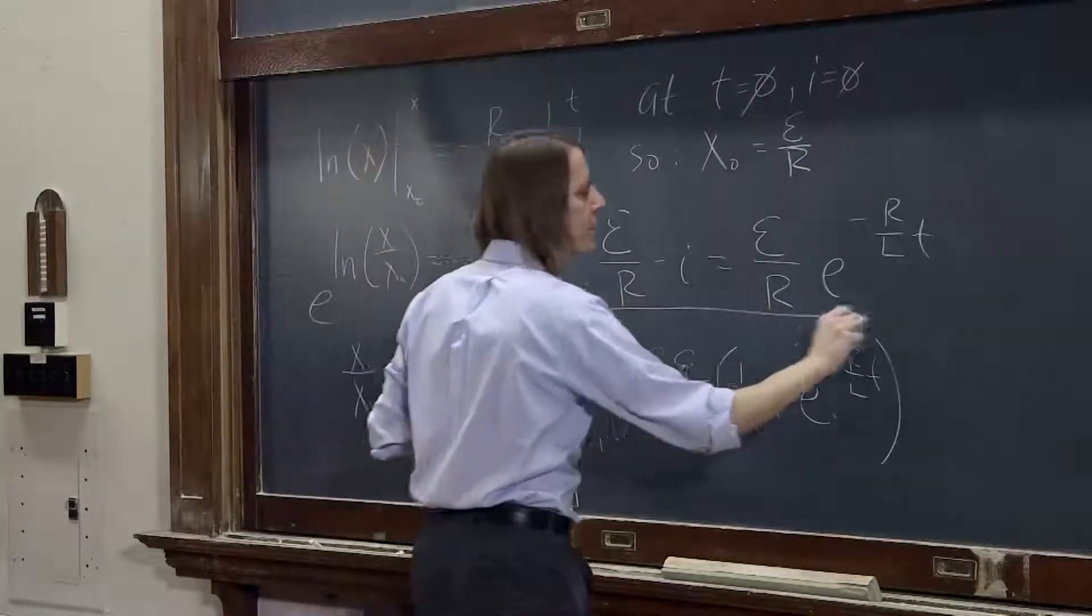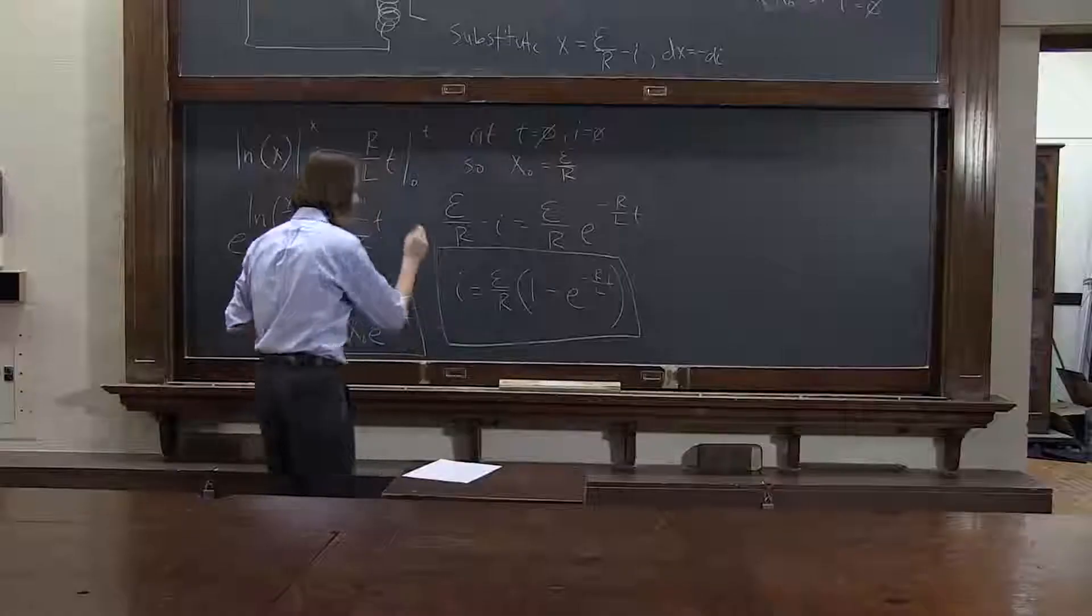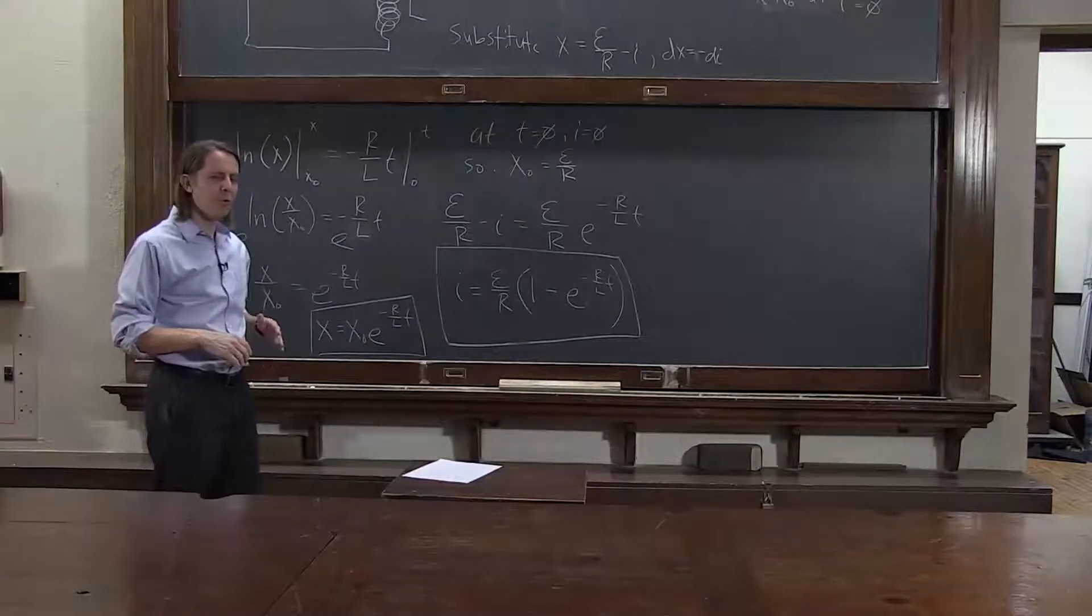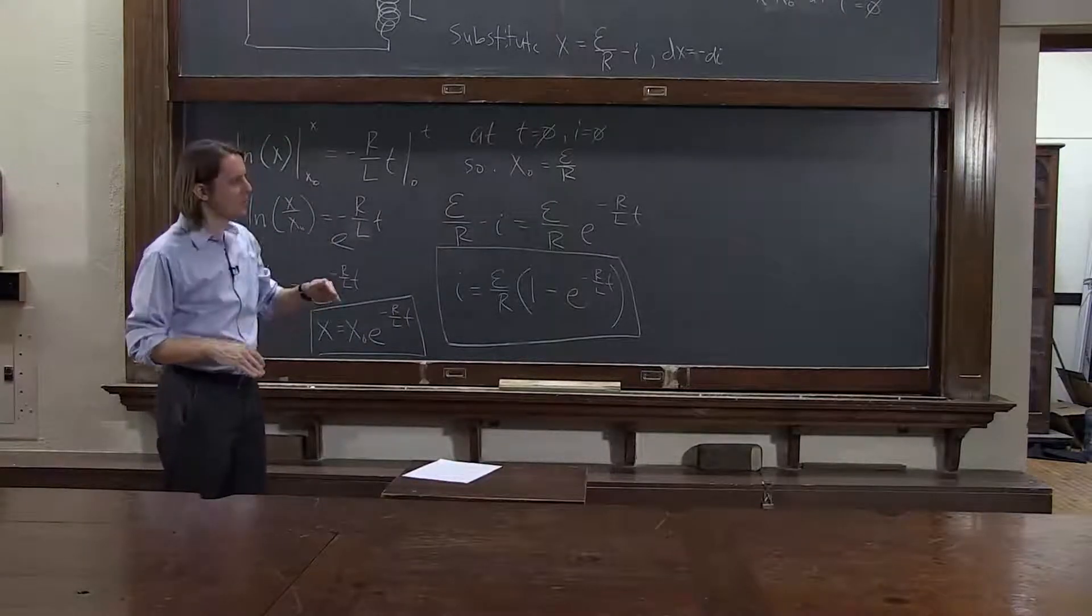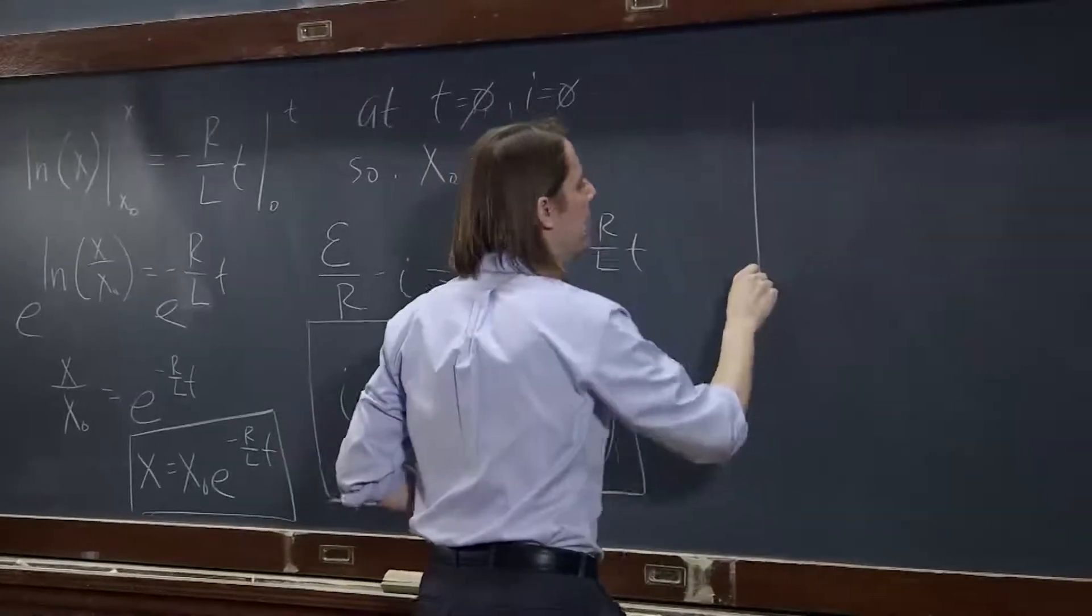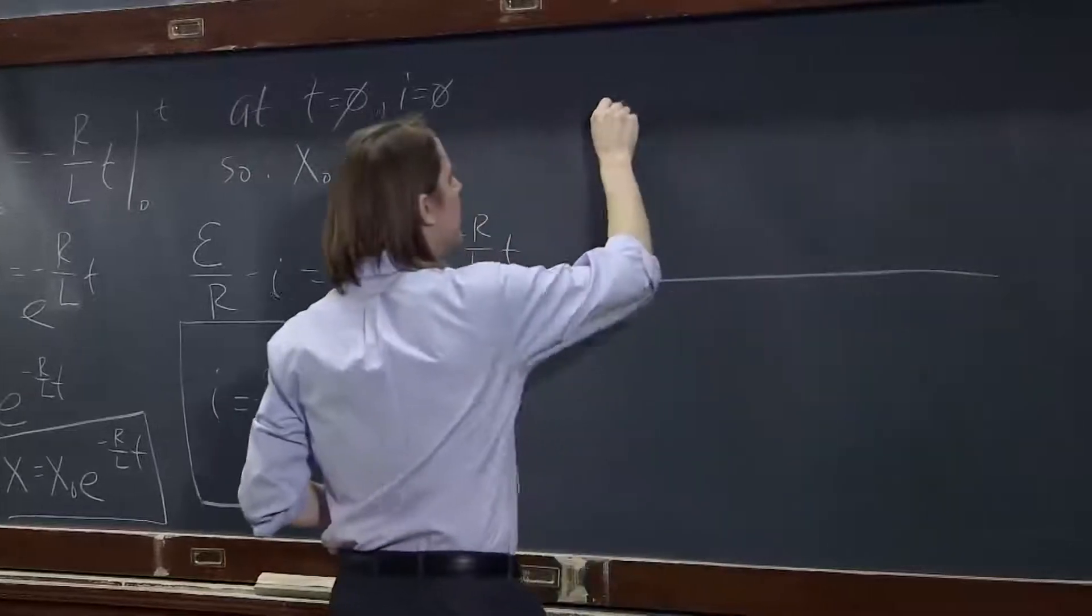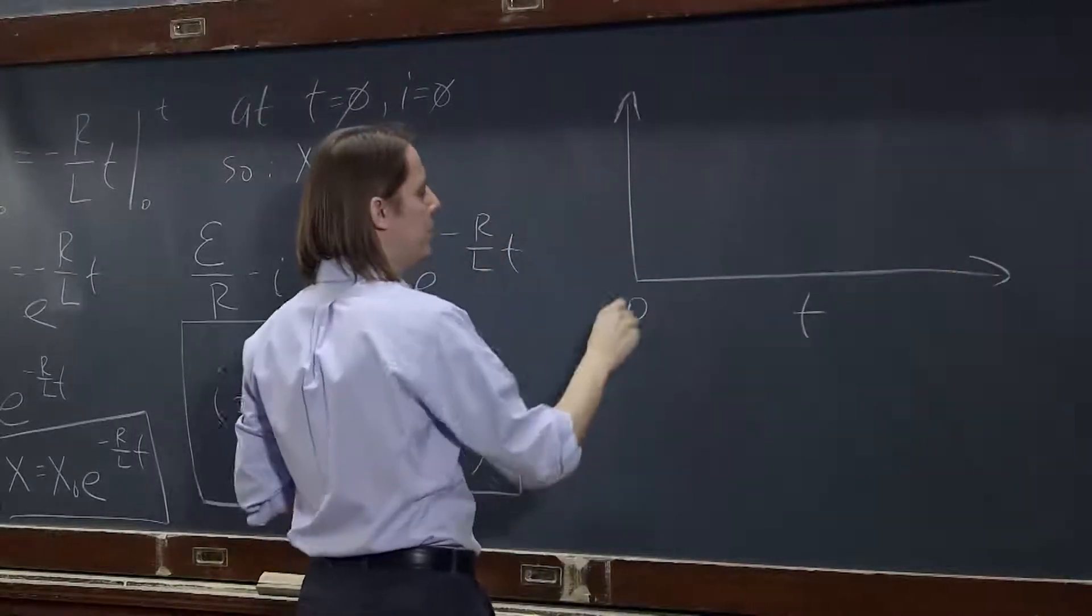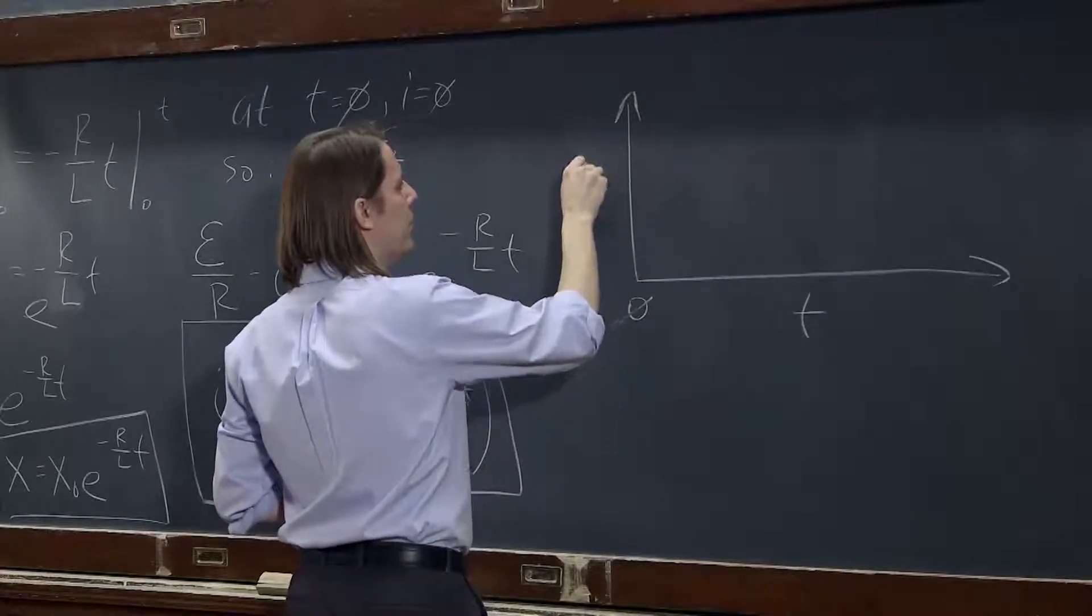So the current as a function of time is an exponential. In this case, it's a thing that grows exponentially to a saturated value, not exponential growth, but exponential growth. So let's take a look then at what it looks like. Here's time, here's time equals 0,